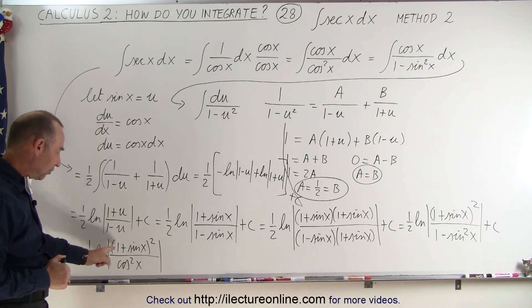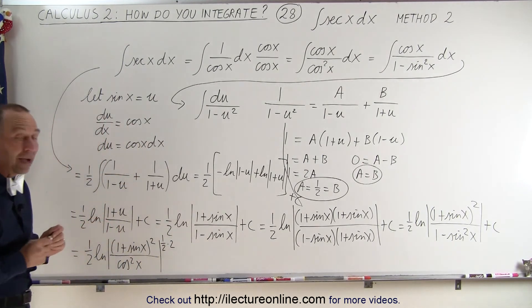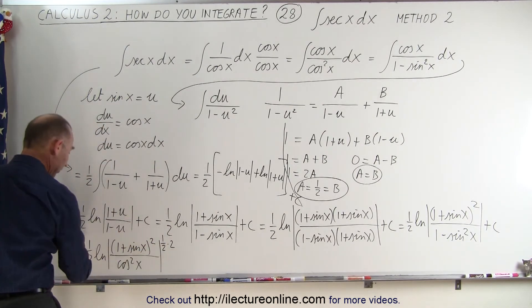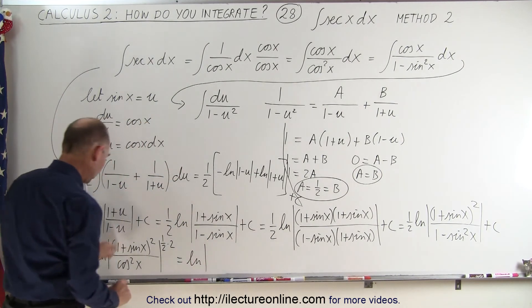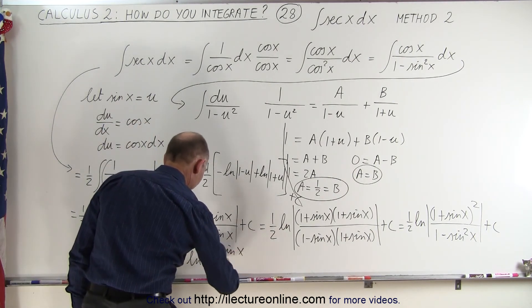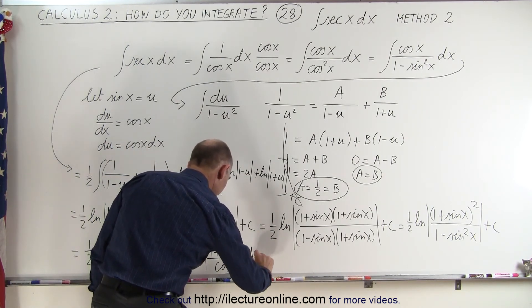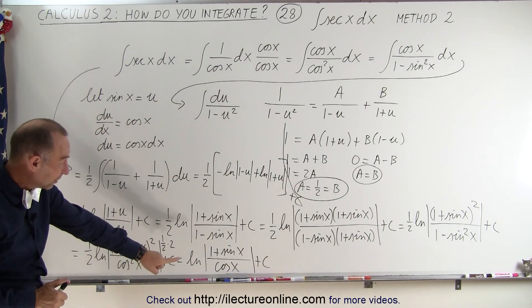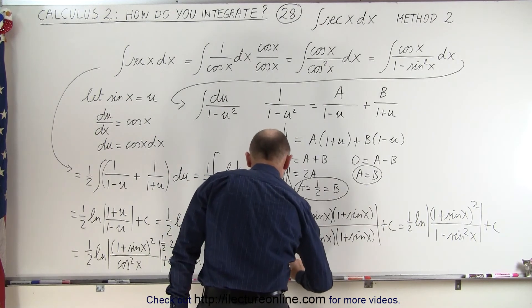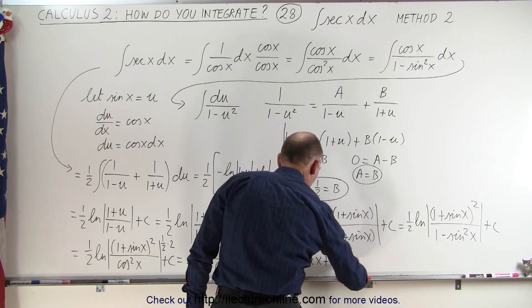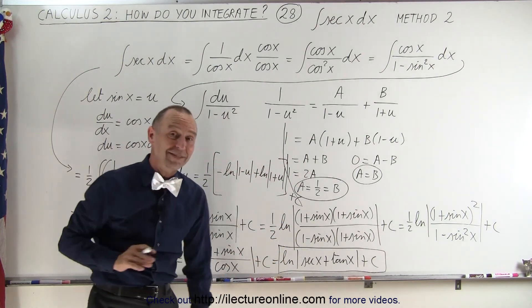Now notice we can take the square root of this expression. We take the square root and the square at the same time, and then bring the 2 to the front — so this becomes 2 times 1/2, or 1, times the natural log of the square root of this, which is (1 plus sine of x) divided by cosine of x. Dividing cosine of x into the numerator: 1 over cosine becomes secant and sine over cosine becomes tangent, so this now becomes the natural log of the secant of x plus the tangent of x, plus a constant of integration.